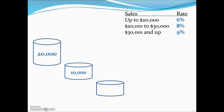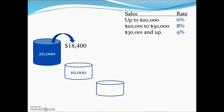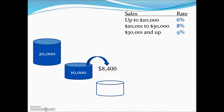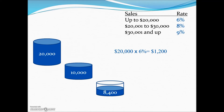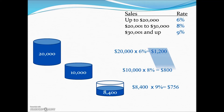Using the sieve method: total sales are $38,400. The salesperson met the first quota of $20,000, leaving $18,400. Of that excess, $10,000 is paid at the 8% commission rate, since $30,000 minus $20,000 equals $10,000. The remaining $8,400 beyond $30,000 is calculated at a 9% commission rate. Adding the three commissions together at their respective variable rates gives gross earnings of $2,756.